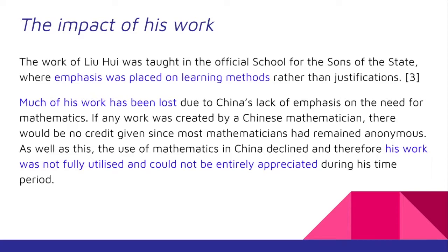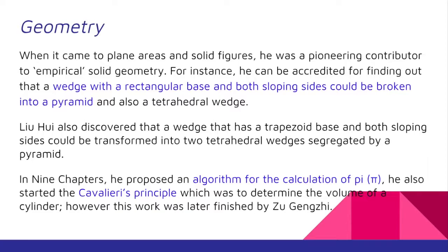When it came to plane areas and solid figures, he was a pioneering contributor to empirical solid geometry. For instance, he can be credited for finding out that a wedge with a rectangular base and both sloping sides could be broken into a pyramid and also a tetrahedral wedge. Liu Hui also discovered that a wedge with a trapezoid base and both sloping sides could be transformed into two tetrahedral wedges separated by a pyramid.